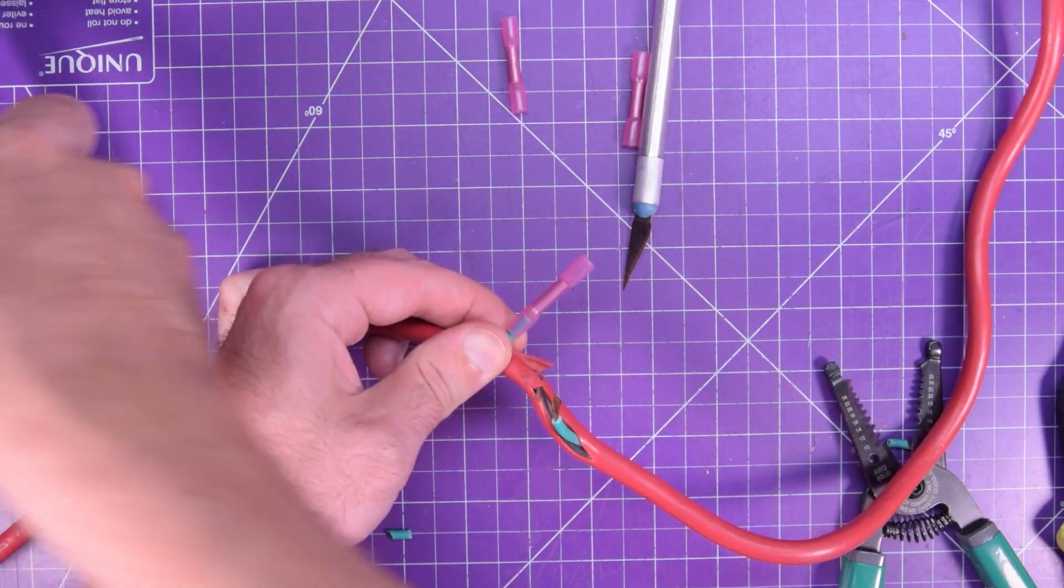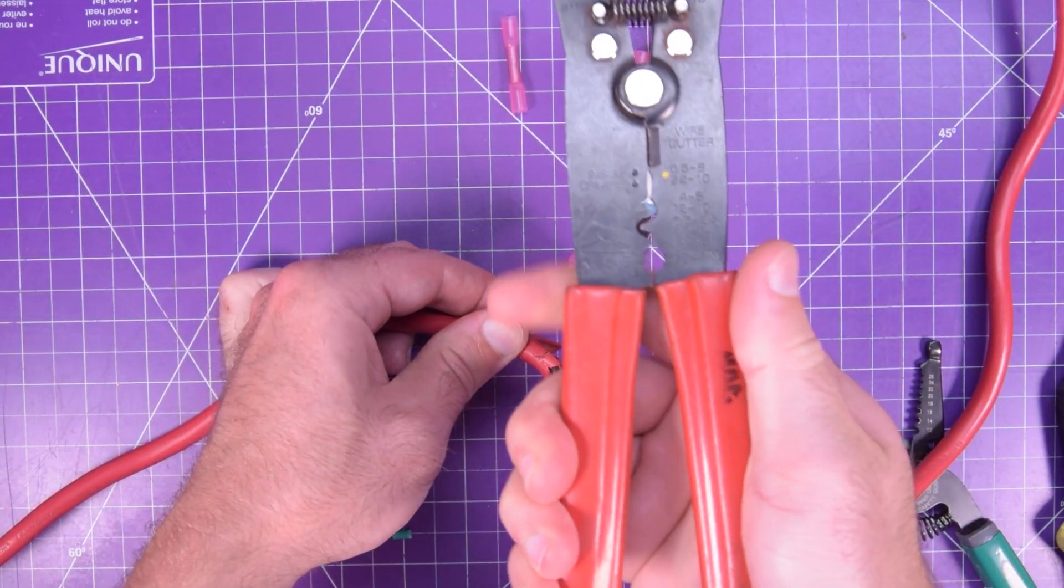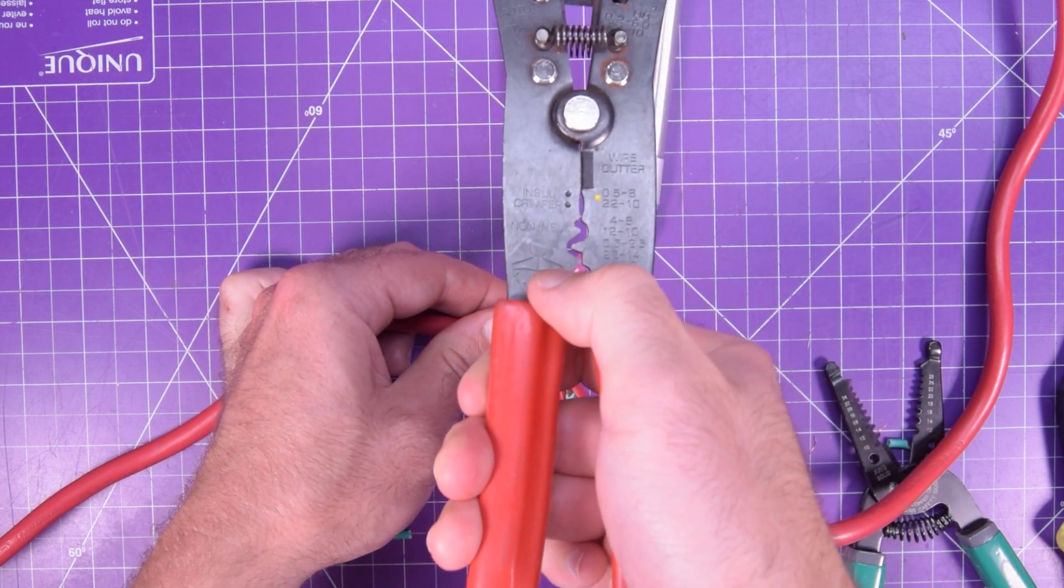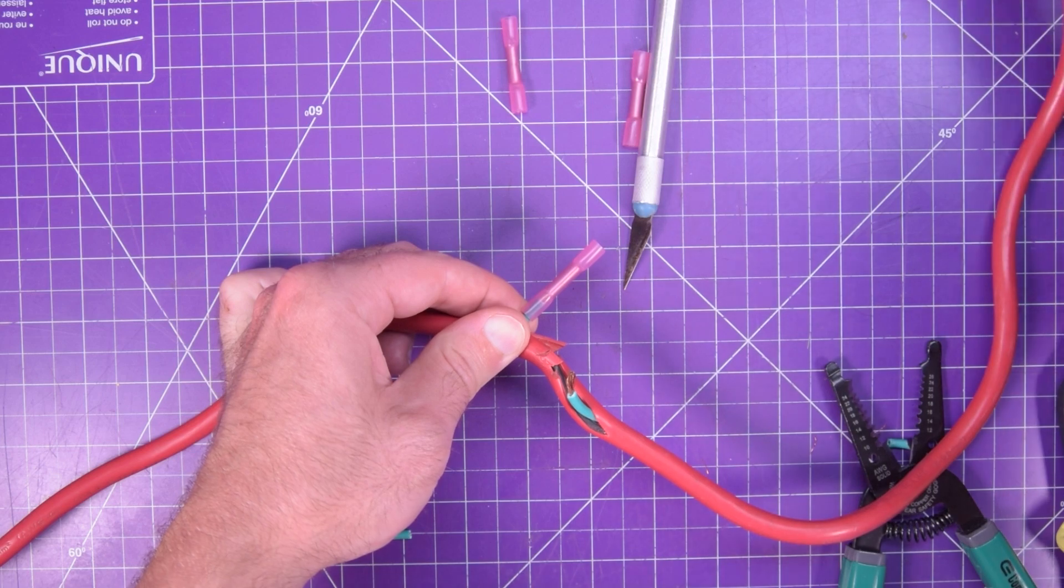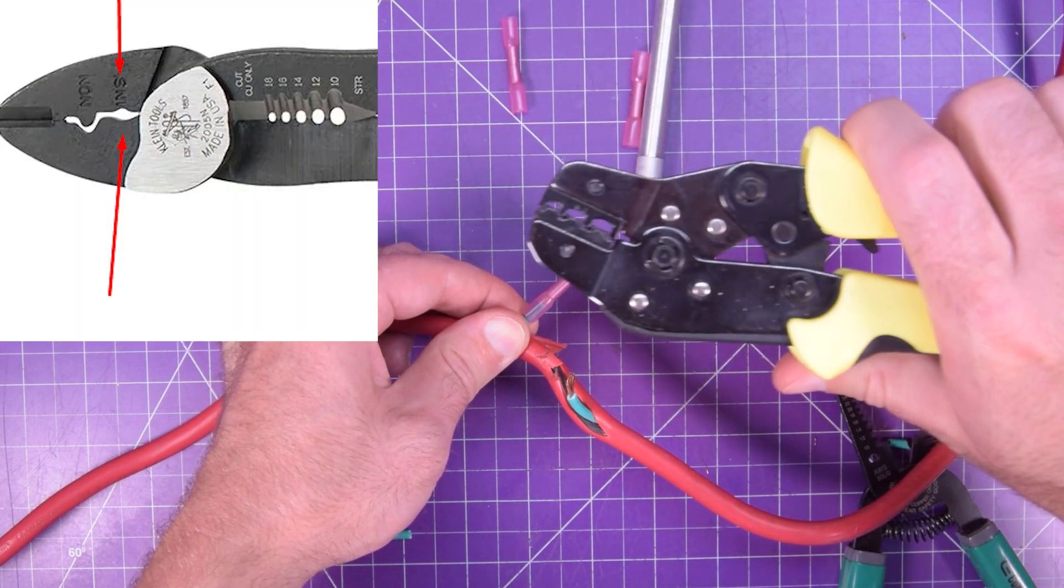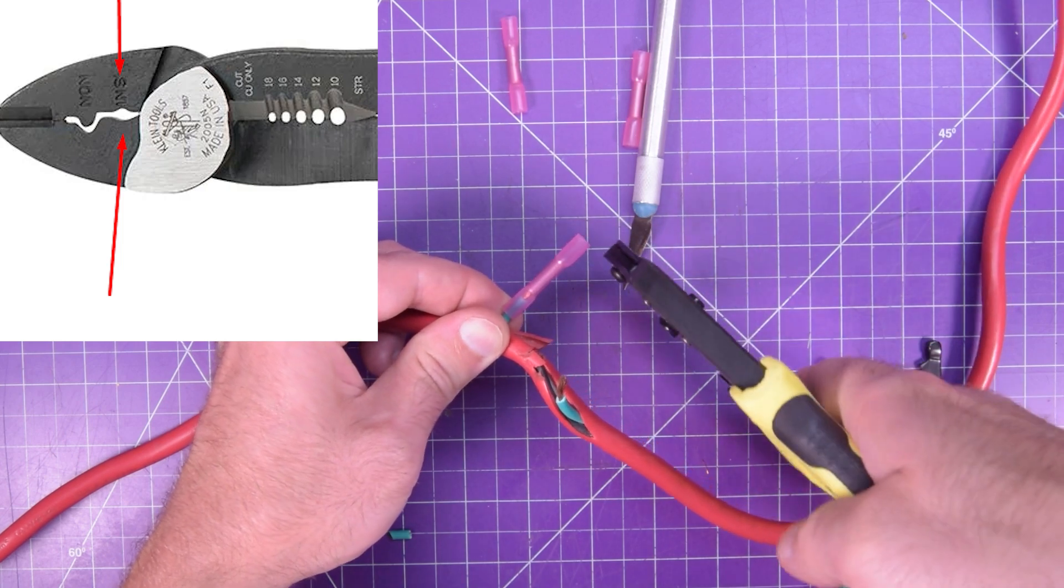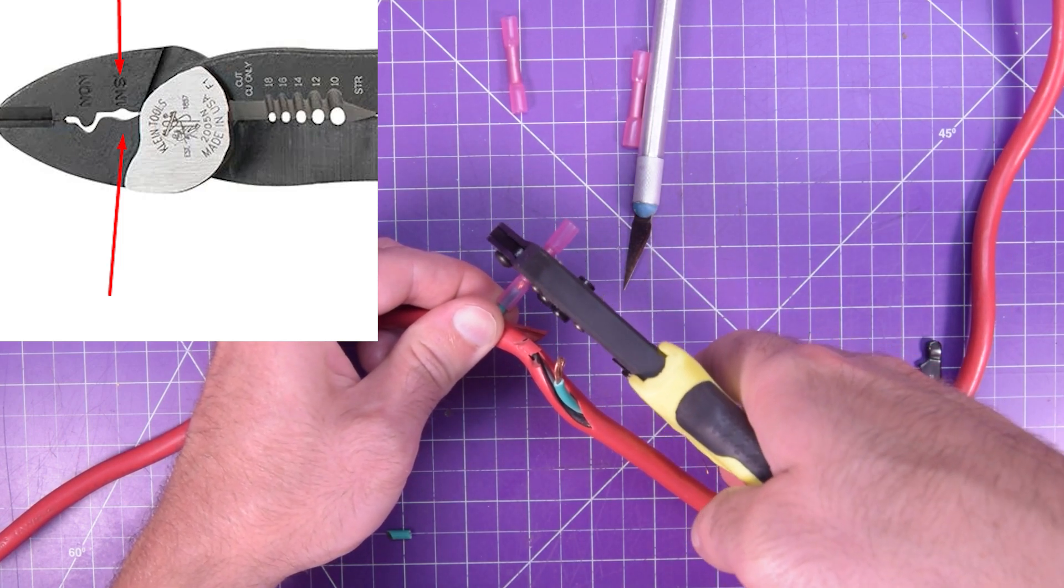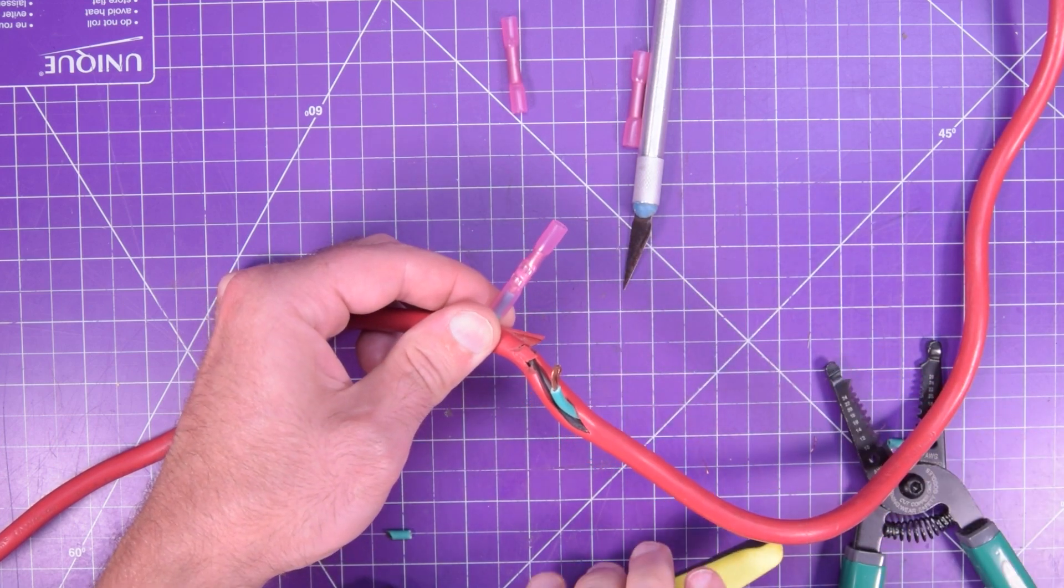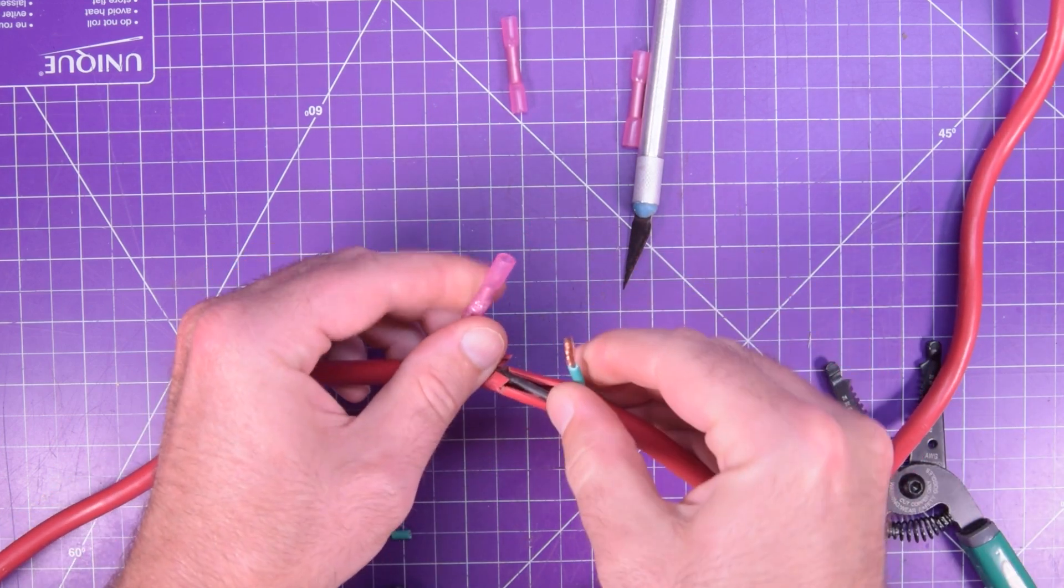Next you want a crimper. You can use something simple like this. If you see here it says this is for the insulated, so it needs to have this kind of semi-circle type hole. Or in this case, I'm going to use ratcheting crimpers. Same thing, see it has that semi-circle. So I'm just going to put this in here, crimp it down tight, and then pop the wire onto the other side.